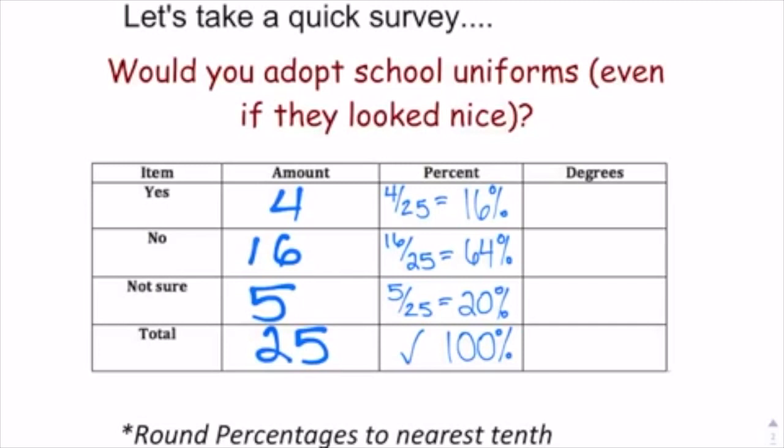Before you build a circle graph, you have to look at the data involved to figure out how big each angle needs to be and exactly how many degrees they need to be. I did a survey with some students on whether they would adopt school uniforms in class, and you can see the votes received in each category, which I took and made fractions to convert into percentages. The next thing I need to do is convert each of these percentages into degrees for the actual circle.